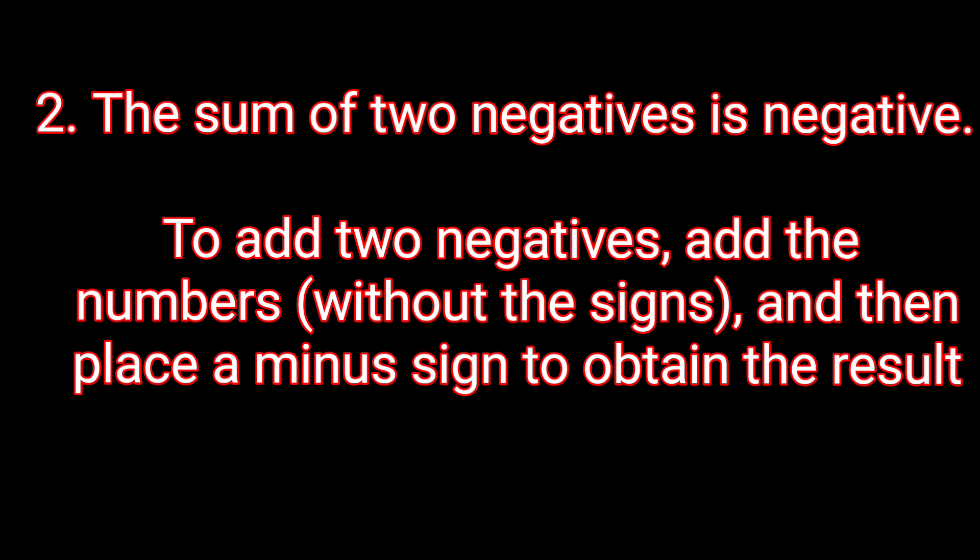The second rule is the sum of two negatives is negative. To add two negatives, add the numbers without the signs and then place a minus sign to obtain the result. It means that when we add two negative numbers, we always get a negative number. So to add the negative numbers, you just add the numbers first without the sign. Do not take the sign, just add the numbers. How you would do addition? Same way you have to do it and then you put the minus sign.